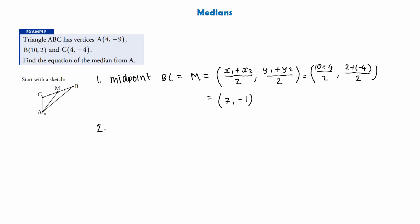Step two is to work out the gradient of line AM. For the equation of a line we need a point on the line and the gradient. Using the formula (y₂ − y₁)/(x₂ − x₁), with M as (7, −1) and A as (4, −9): we get (−1 − (−9))/(7 − 4) = (−1 + 9)/3 = 8/3. So the gradient of line AM is 8/3.